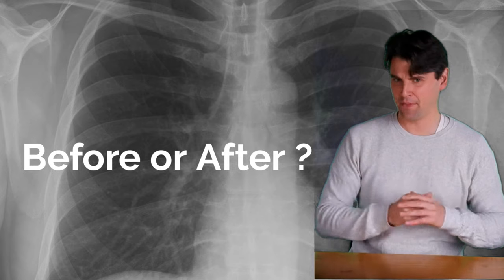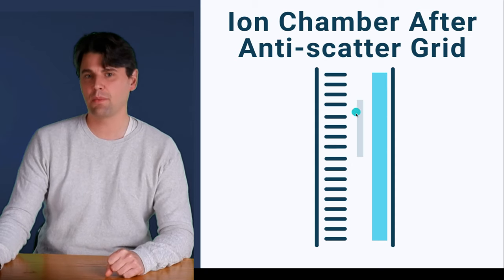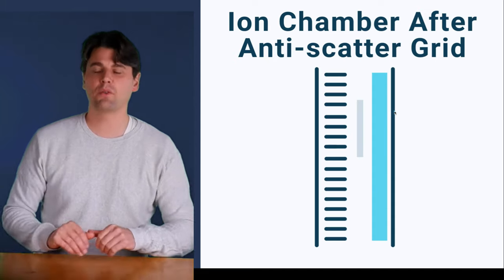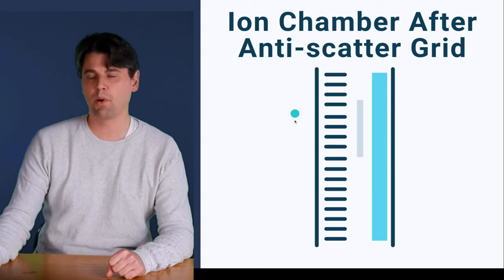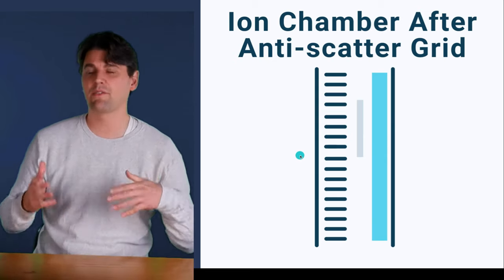Do you think the ion chamber should be before or after the anti-scatter grid? X-rays are coming in this direction, they're going to pass through the anti-scatter grid, they're then going to be measured in our ion chamber, and then measured at our image receptor. If we were to put the ion chamber before our grid, in that case we wouldn't be able to compensate for changes in the grid.